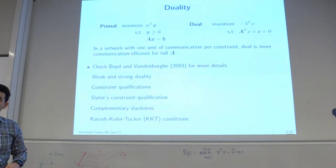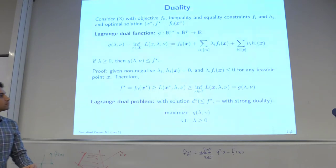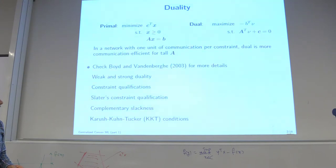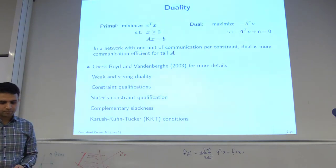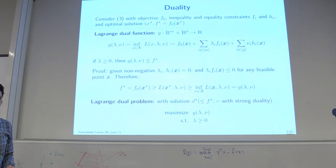Any questions? Here — we usually don't need the equality constraint multiplier to have a specific sign, because if the solution is primal feasible, then h(x) = 0, so it just doesn't matter what nu is. That enables KKT conditions and complementary slackness.